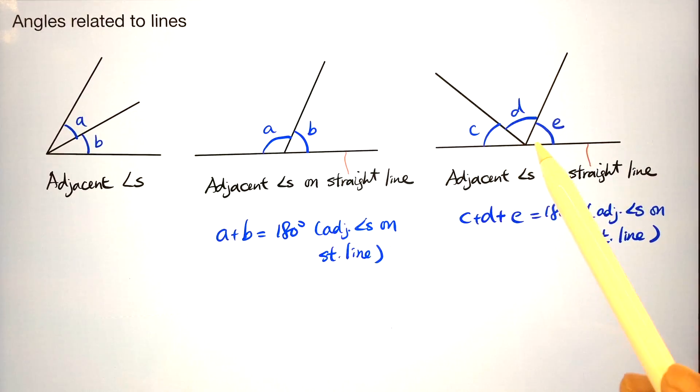Here we have another set of adjacent angles on straight line, CDE. The sum of them are all 180 degrees. And the reason we have to write down is adjacent angles on straight line.